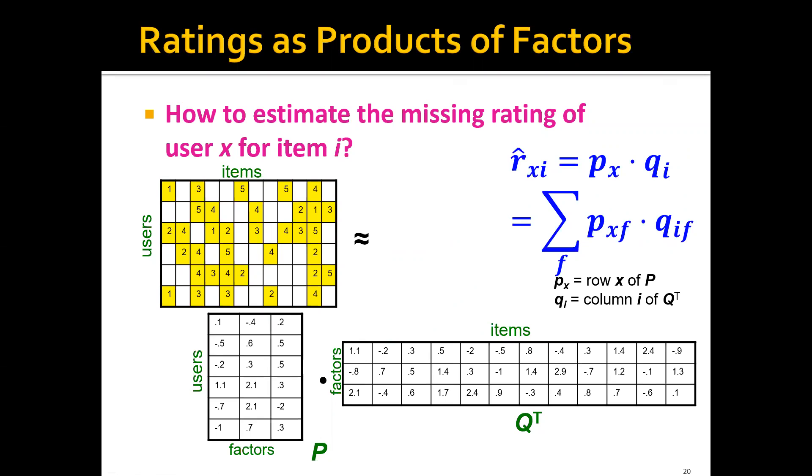Let's say we have already successfully factorized the rating matrix into two matrices, P and Q. How do we estimate the missing rating of user X for item five? For example, if we want to estimate the rating of user two to item five, we can just take the factors for user two and the factors for item five, and use their inner product to estimate the rating. In this case, this gives us 0.4, which is the estimated rating for this entry.